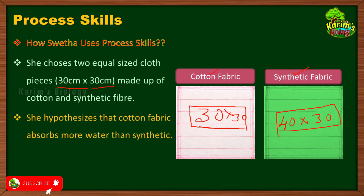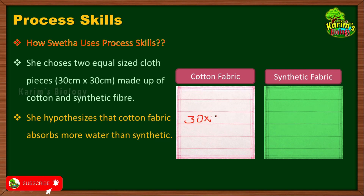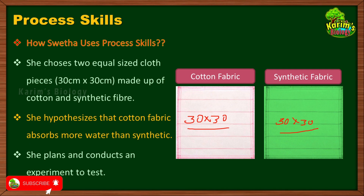In the second step she made a hypothesis. Hypothesis means just making a guess. She made a hypothesis that cotton fabric absorbs more water than synthetic fabric. Now she has to check this hypothesis by conducting a small experiment. Both cotton fabric and synthetic fabric should be 30x30 centimeters in size — both must be equal.